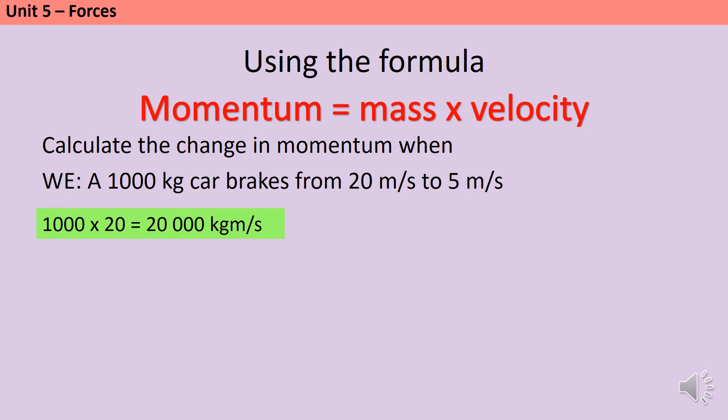Then, after it brakes, it's only moving at 5 meters per second, so again, I take the mass of 1,000 and I multiply it by that new velocity to get a total momentum of 5,000 kilogram meters per second. If I then work out the difference between those two numbers, I can see that the change in momentum has been 15,000 kilogram meters per second.